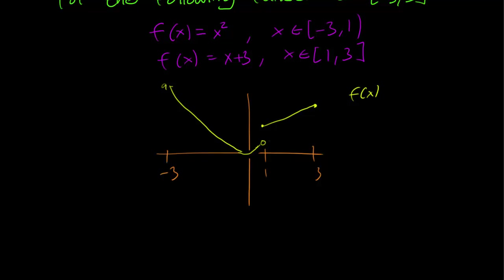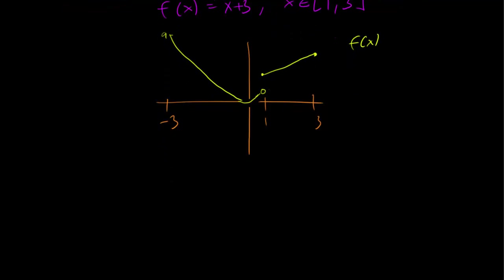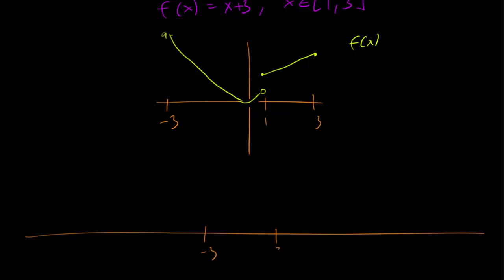Now we have to write down the Fourier extension. Let's draw that graph, scaled a bit differently. So minus 3 to 3, and we have the same function. Since we are looking at a periodic extension, we need to mark down 9 here, then 15 here, then minus 9 here, and minus 15 over there. And we just repeat the same pattern over and over again.